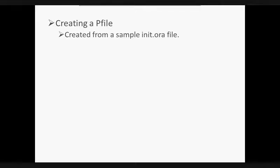Now let's see how to create a pfile. When we install Oracle software, one sample init.ora file is created automatically. By using this sample file, we can create our pfile. If our database is already running and is using spfile, then from the spfile we can create a pfile. Its default location on Unix is $ORACLE_HOME/dbs.